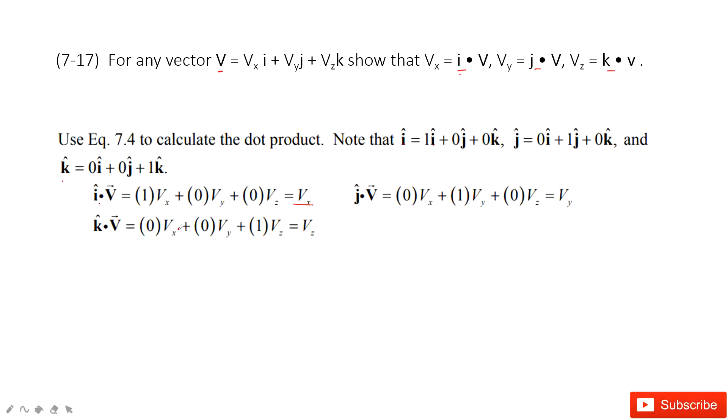This is how we project the vectors in the three components. We just use the components i, j, k to dot with v. It gives the magnitude in each component: vx, vy, and vz. Thank you.